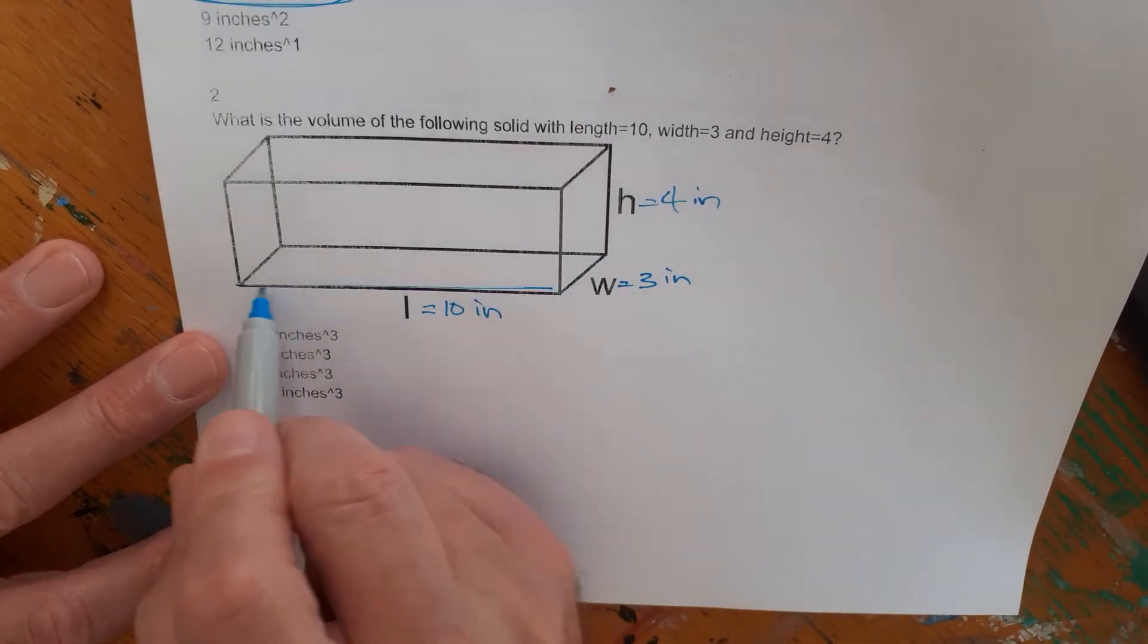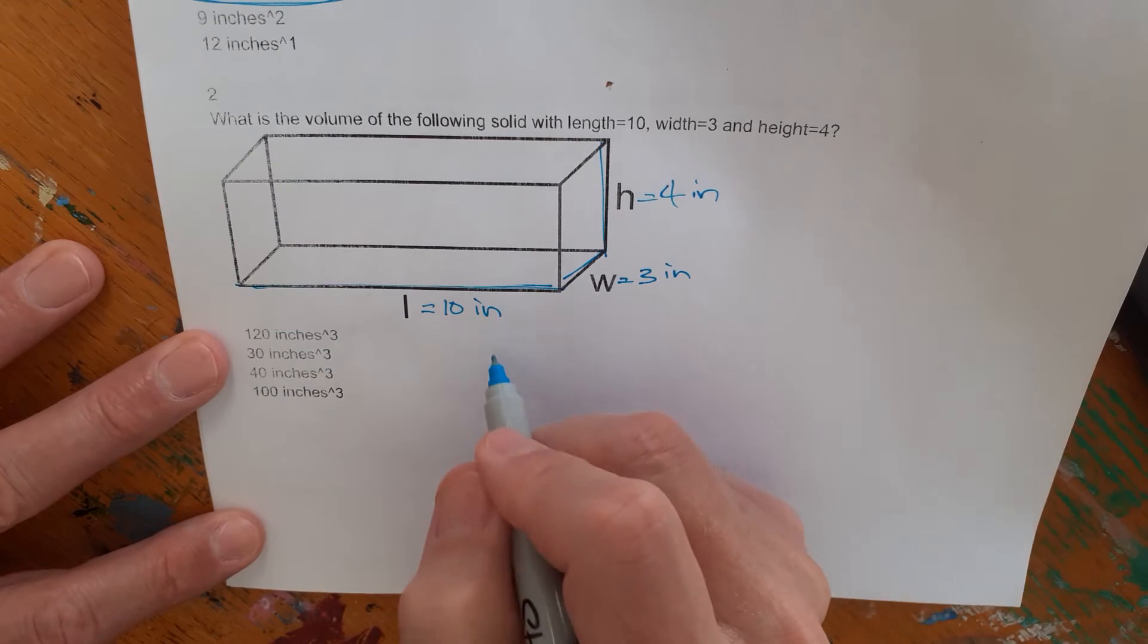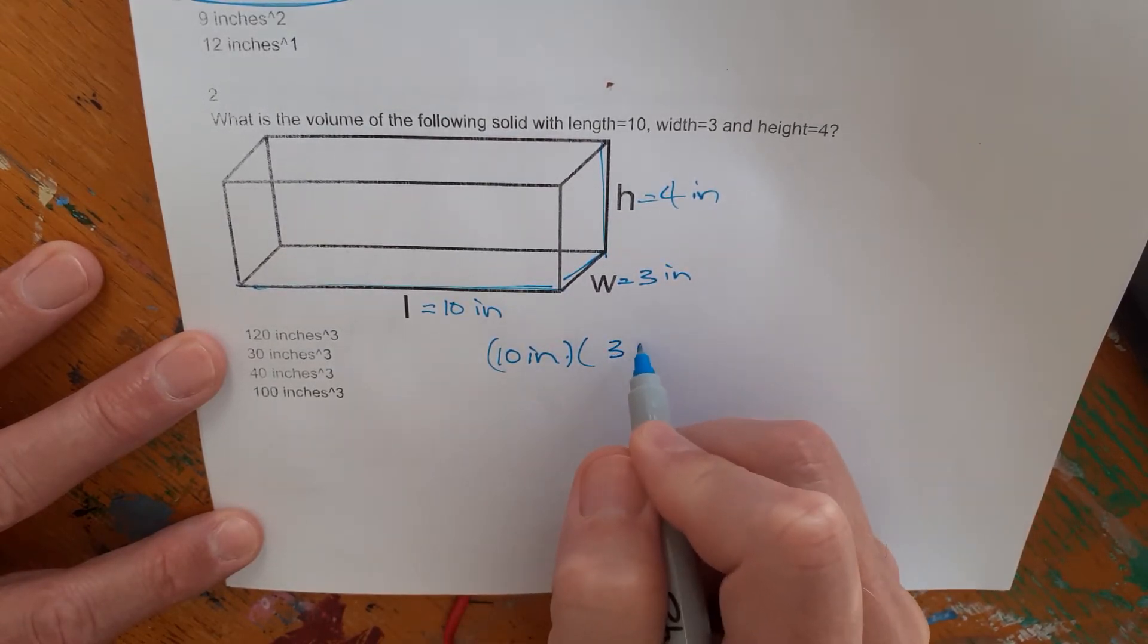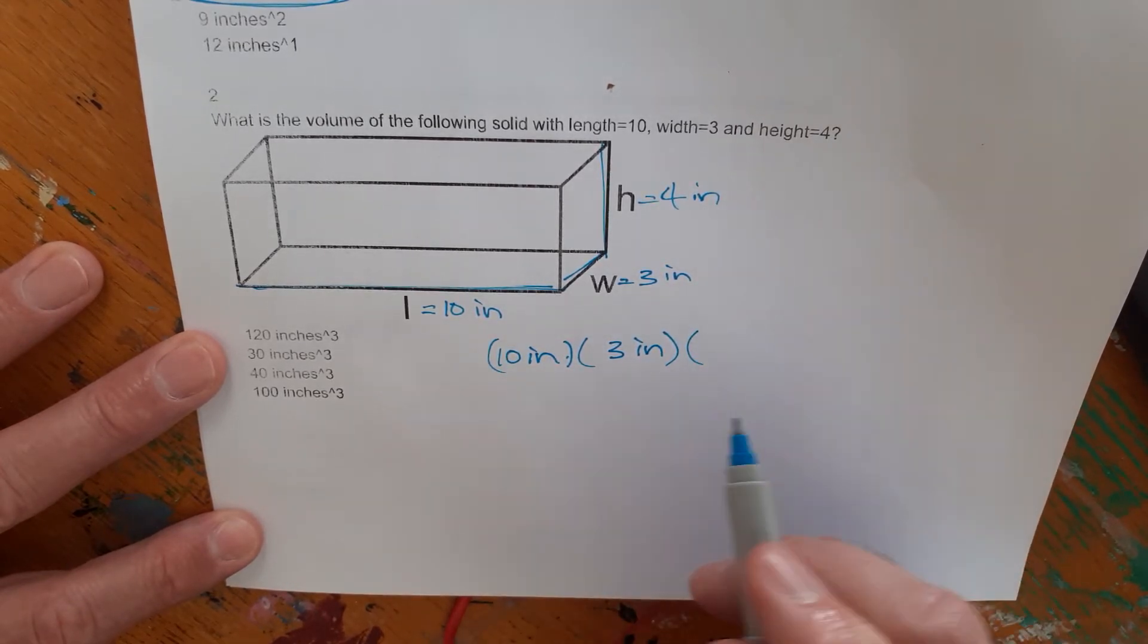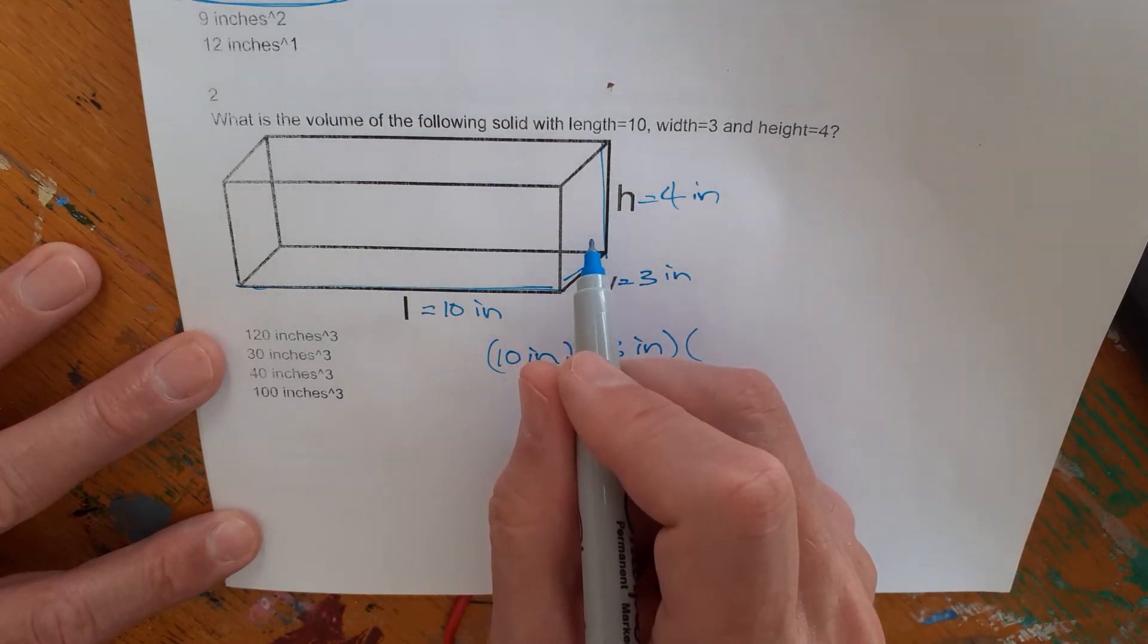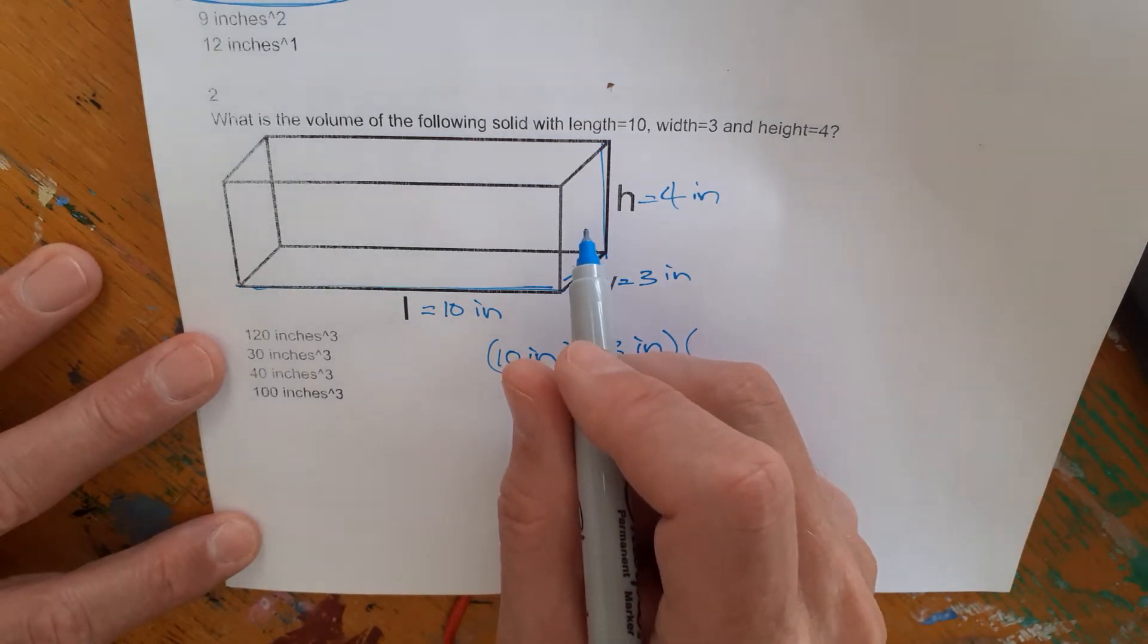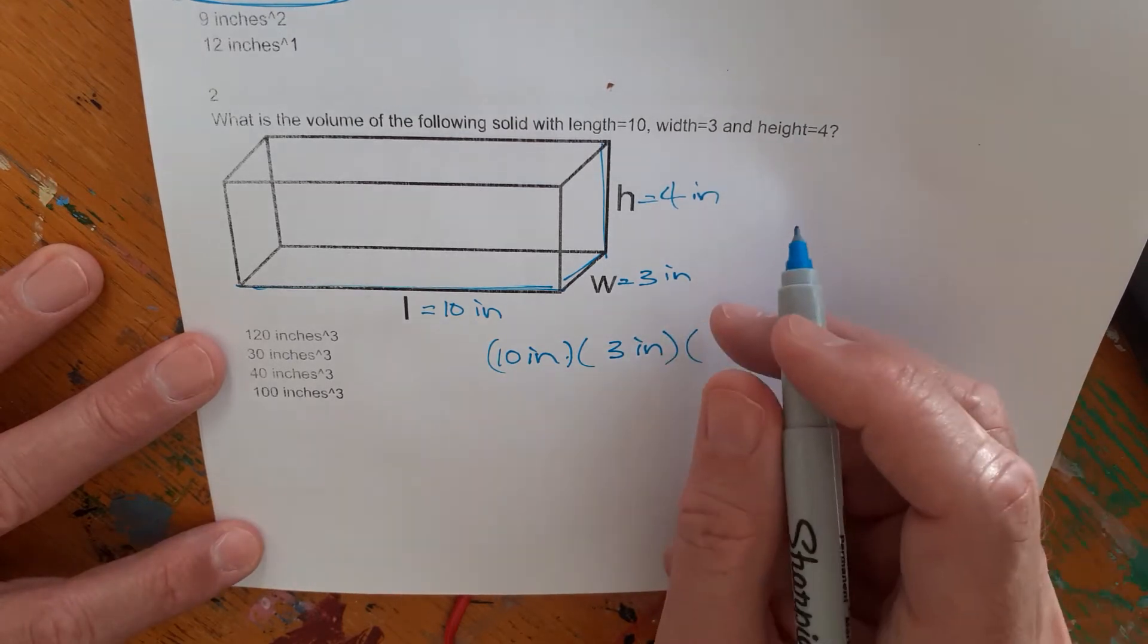So again, it's length times width times height. Here's the length, here's the width, here's the height. So we're going to take 10 inches times three inches. Notice again, we're including the units in the calculation of this shape. Remember the notes for all these in terms of the length times width times height, those volume calculations are all in the notes for this pages on your comp book that you're putting in there from creatormath.com.